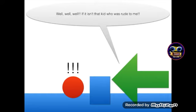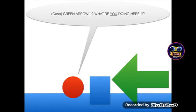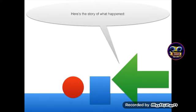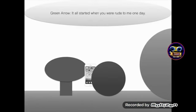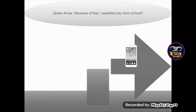Well, well, well. If it isn't that kid who was rude to me. Green Arrow, what are you doing here? Here's the story of what happened. It all started when you were rude to me one day. Because of that, I expelled you from school.